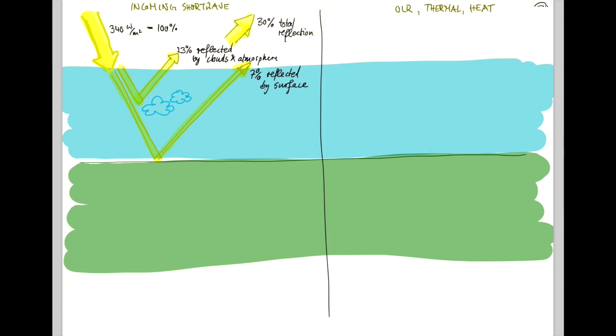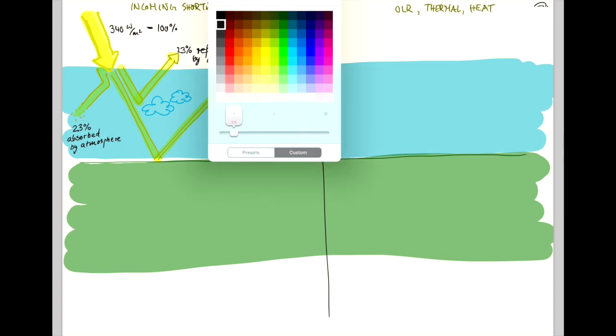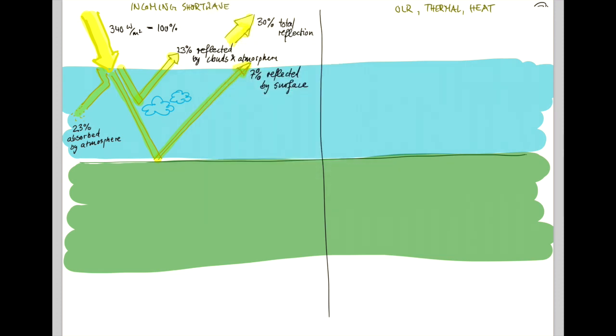Now, what happens to the other 70%? Well, a whole lot of it, namely 23%, gets absorbed by the atmosphere. That leaves us with 47%, which is what the surface of Earth actually receives and absorbs from the incoming solar radiation.